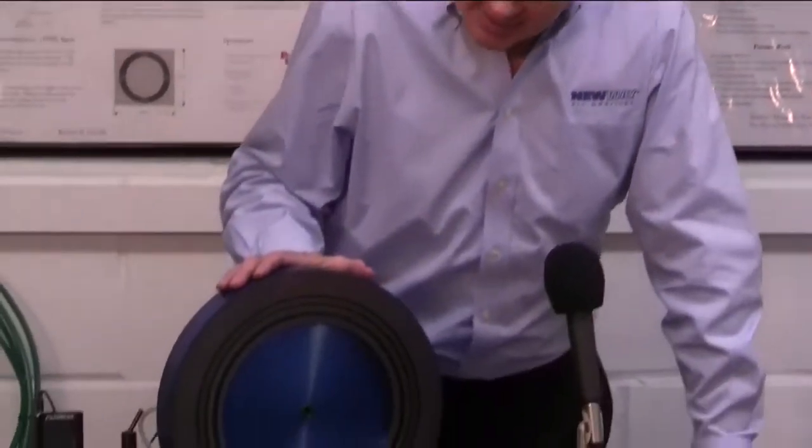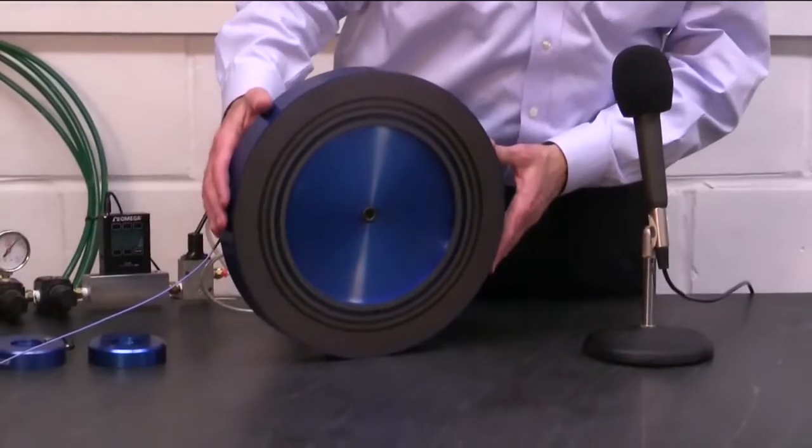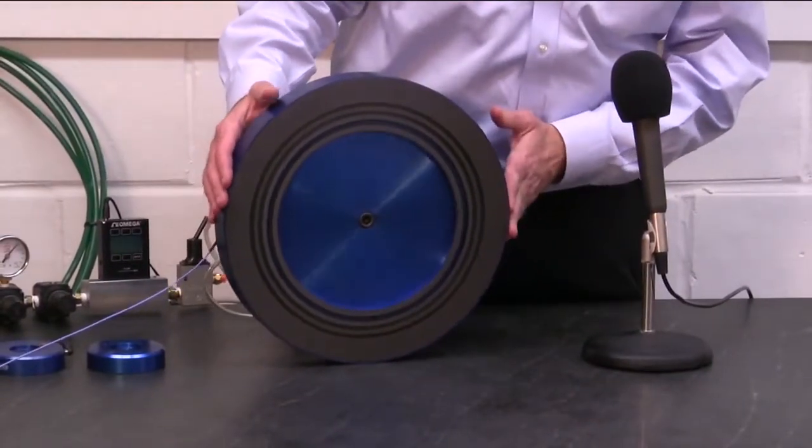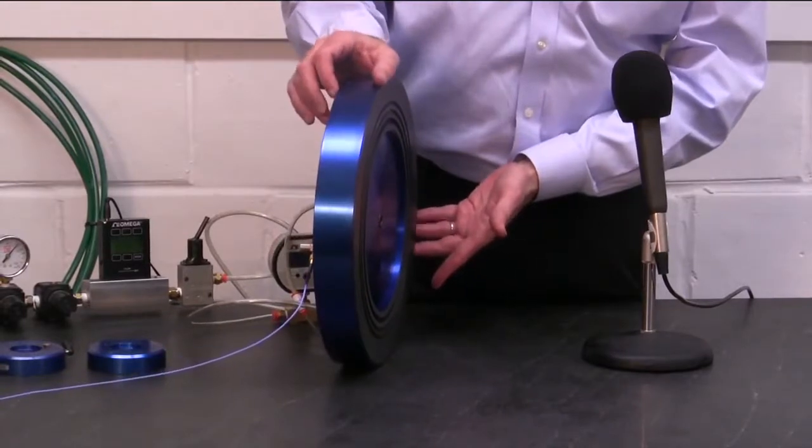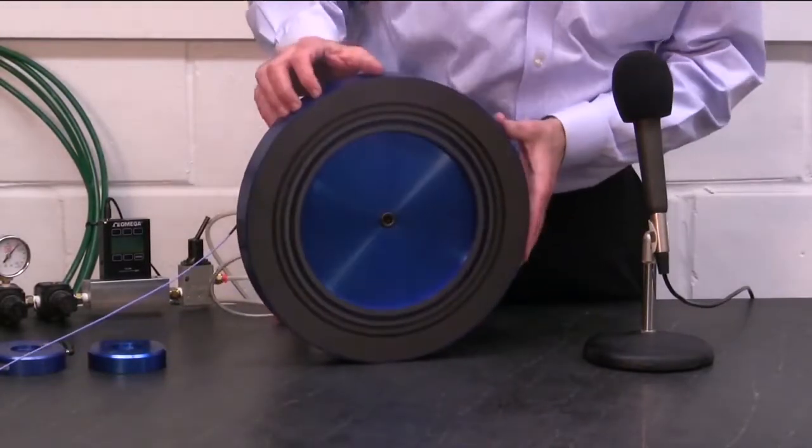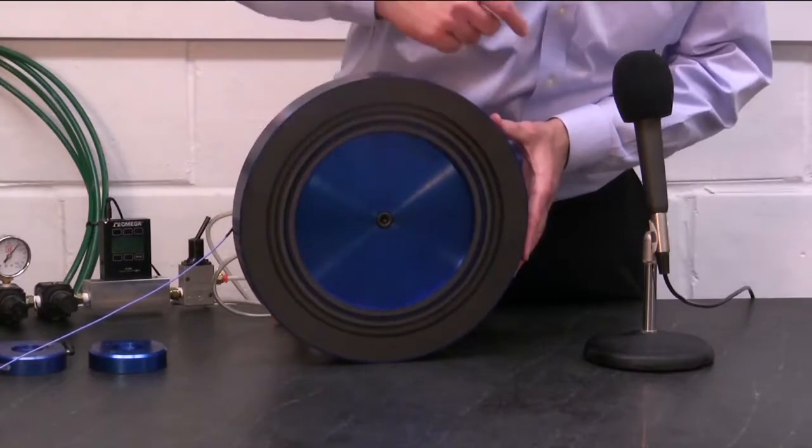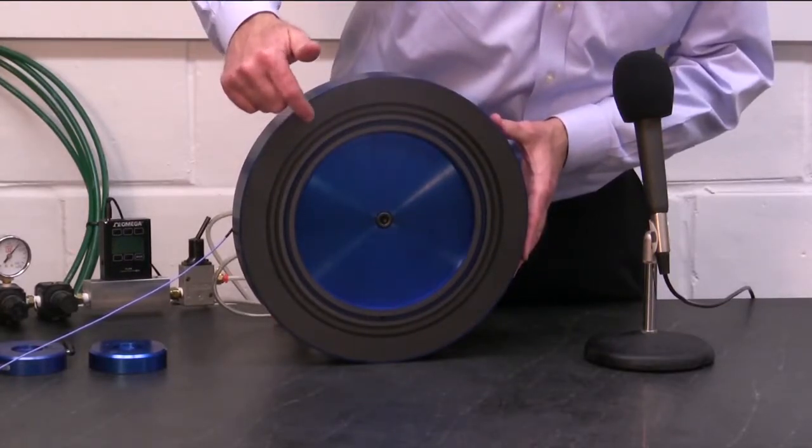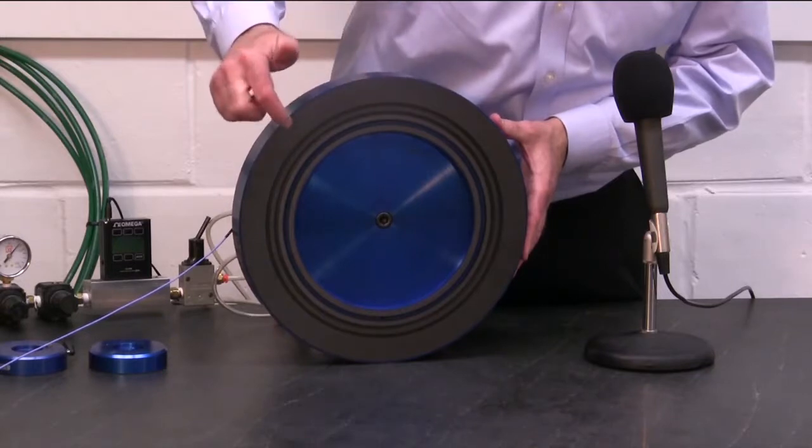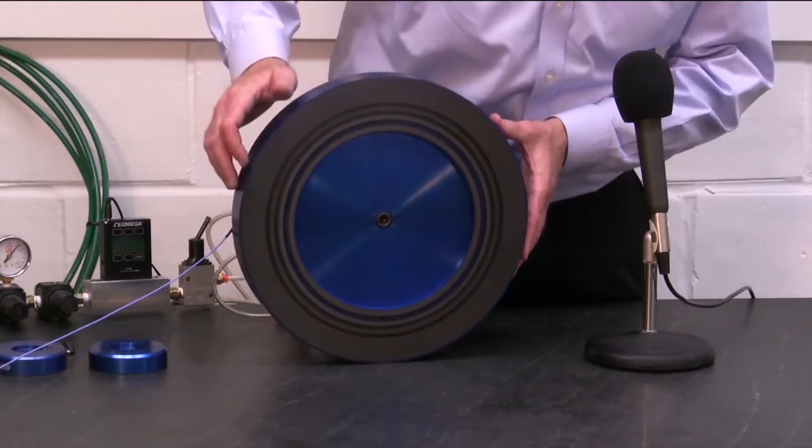So what we have here as a subject to study is a vacuum preloaded air bearing. It's 13 inches across in diameter, about two inches thick. We have about 80 square inches of vacuum area inside here, and 35 square inches of air bearing pressure land at the perimeter. The two regions are separated by an ambient groove.